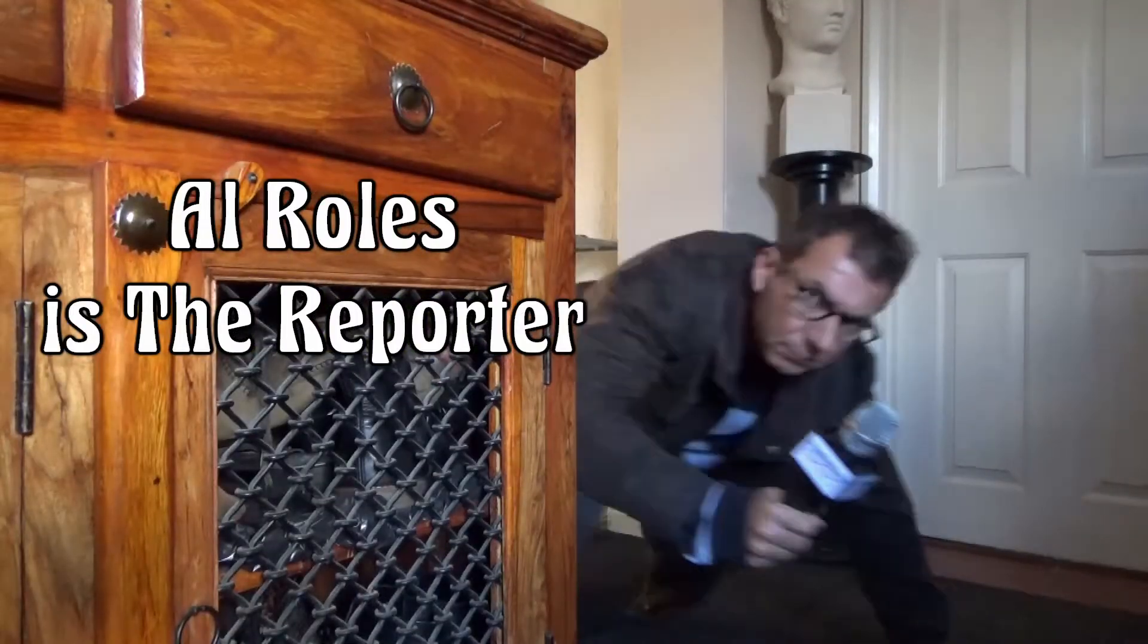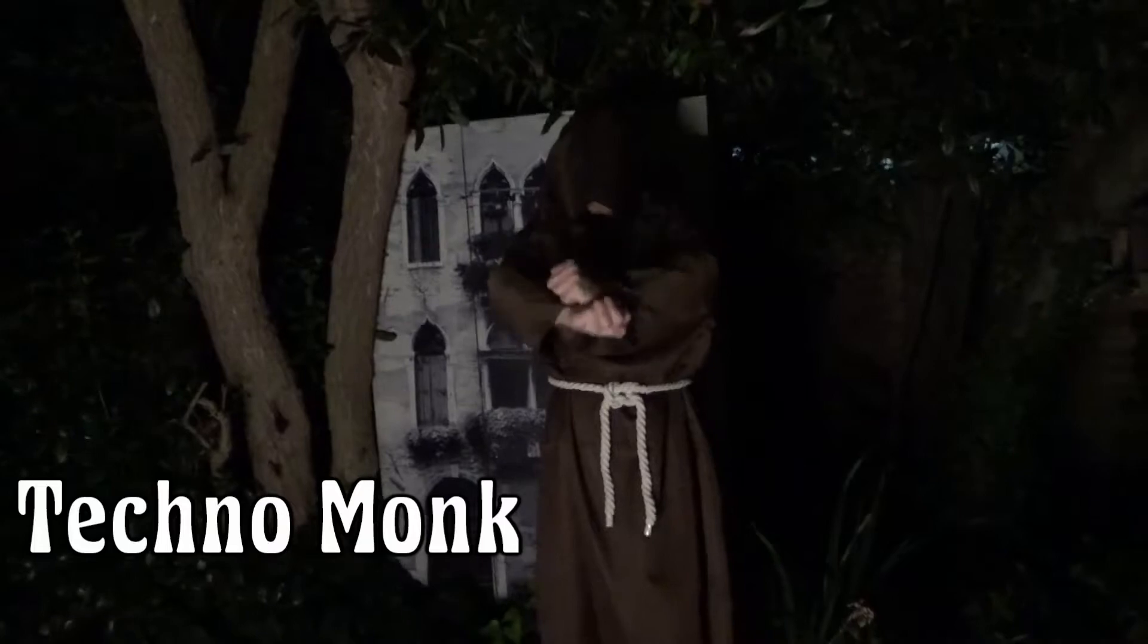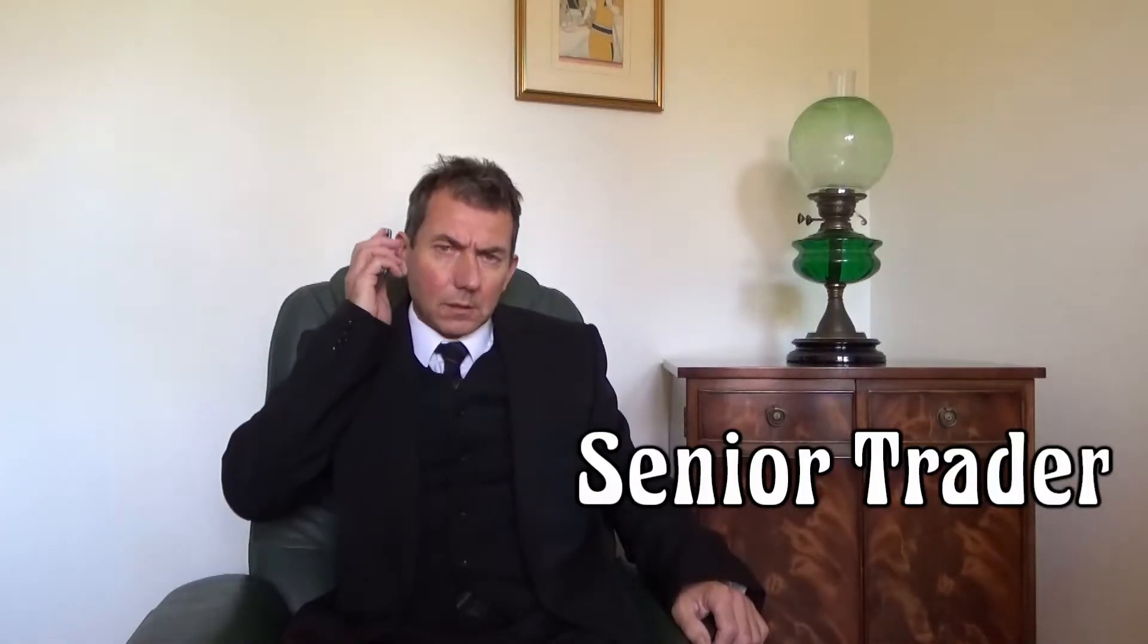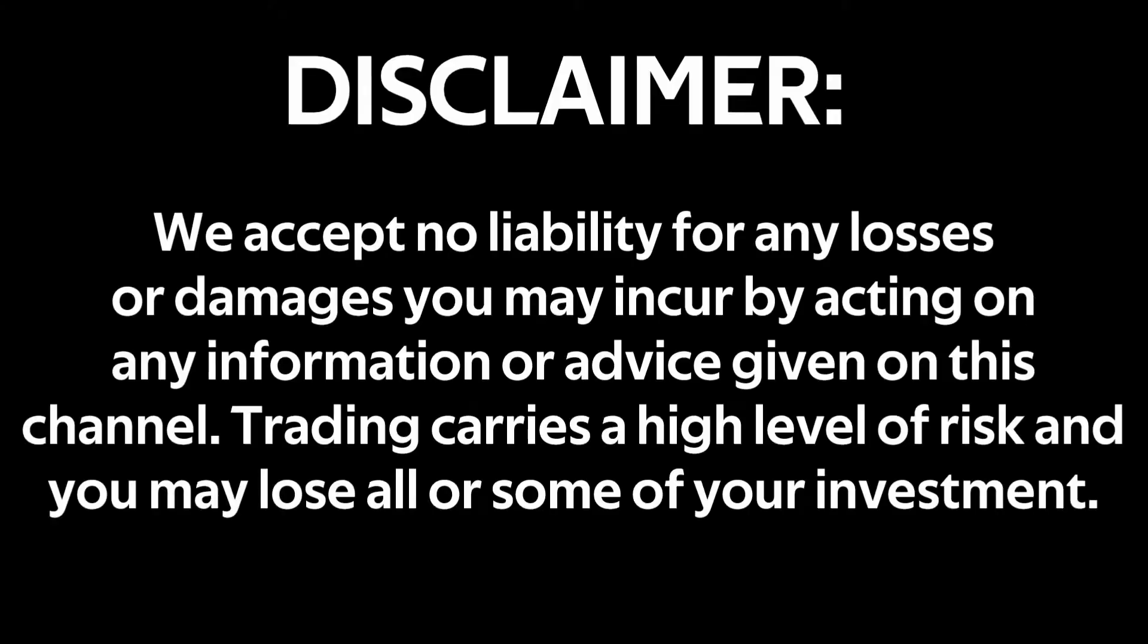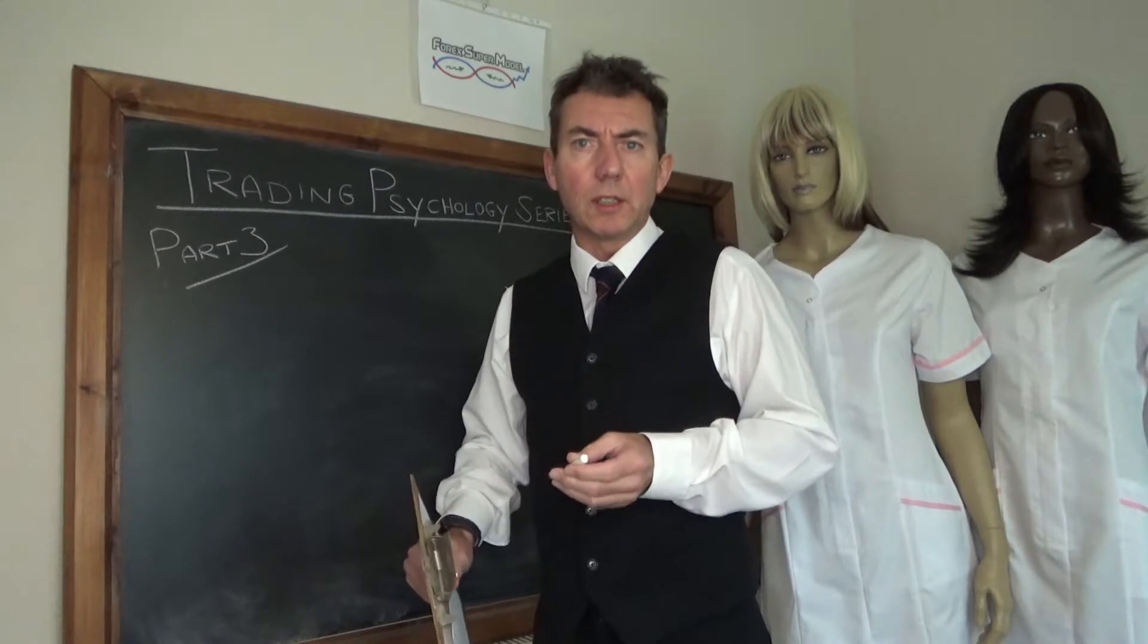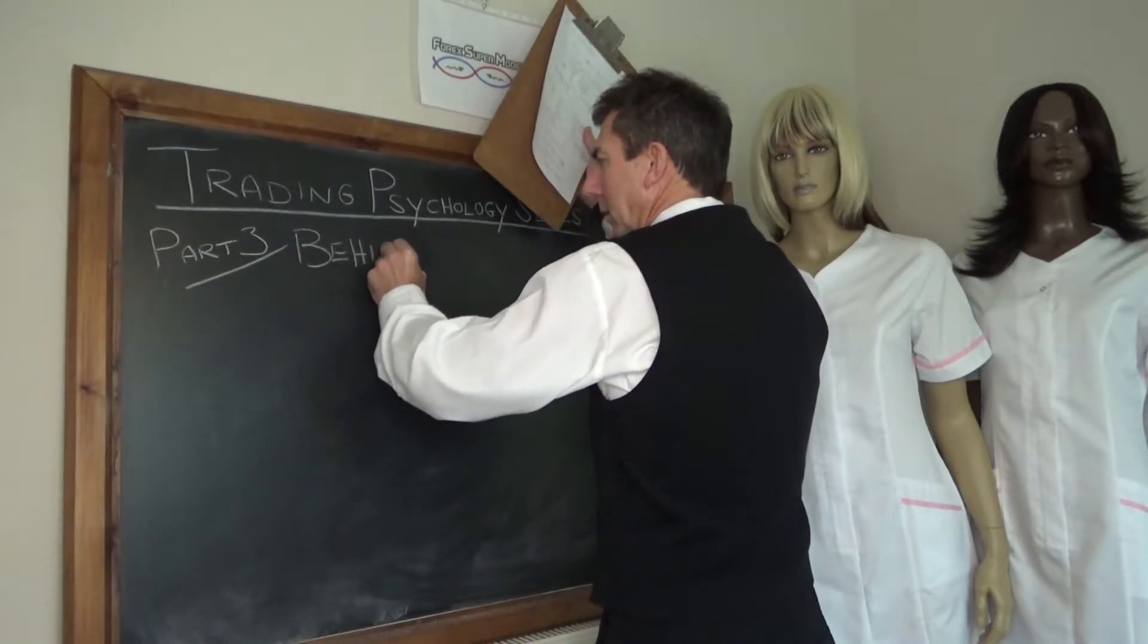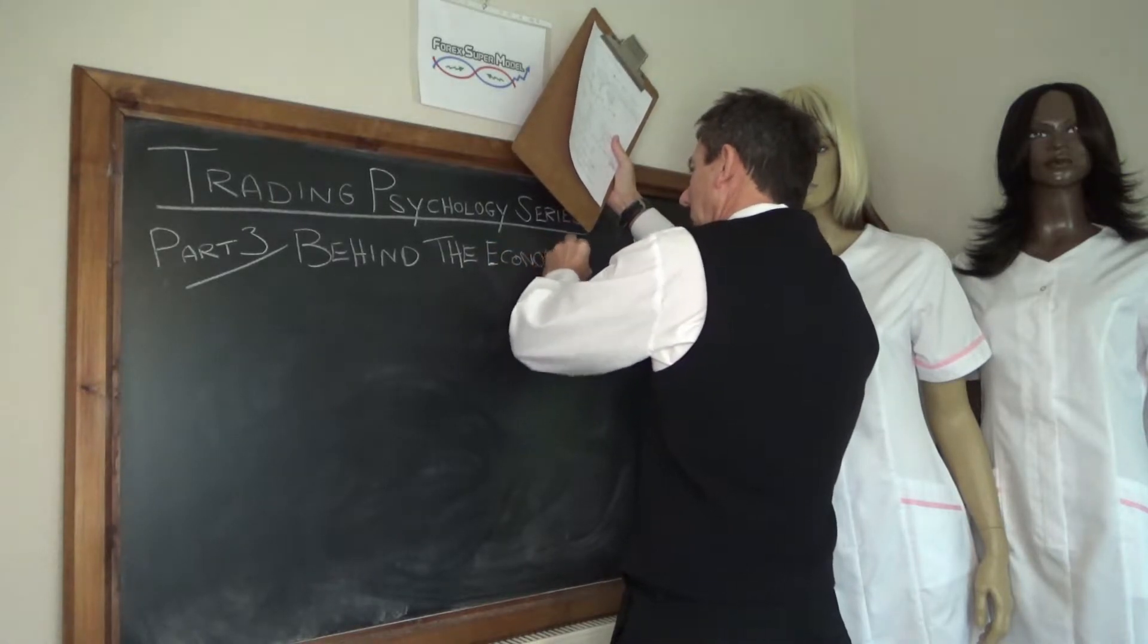Al Rold is the reporter thrown into the secretive world of the 4M supermodel, where nothing is as it seems. Beware the techno-monk and steer clear of Professor Code and his two assistants. Give the senior trader a wide berth. Hello, I'm the senior trader for the 4X supermodel, and this is a continuation of the trading psychology series, part 3, entitled Behind the Economic Calendar.